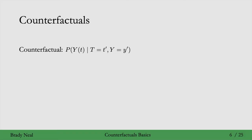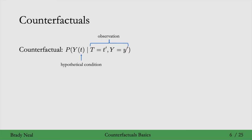We'll first introduce some notation for counterfactuals. Here we have the distribution of Y_t — the potential outcome we would observe if we were to take treatment little t — given that we observed T takes on the value t prime, a different value from t, and also an observation for y. We call this the observation: for a specific unit, we observed they took treatment t prime and observed outcome y prime, and we want to know what would have happened had they taken a different treatment. This is a counterfactual because the hypothetical condition, little t, does not match the observed t prime.